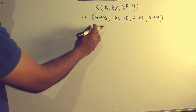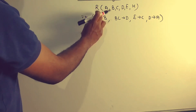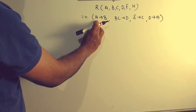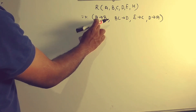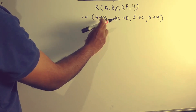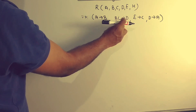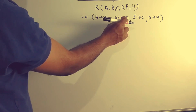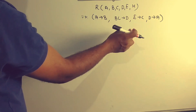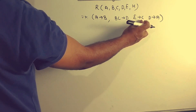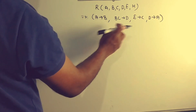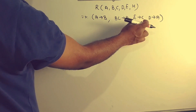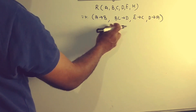Let's take a look at the functional dependencies. The functional dependencies are: A to B, BC to D, E to C, B to A. These are the functional dependencies we are working with.